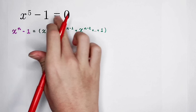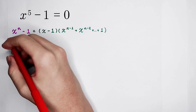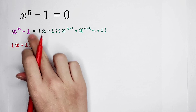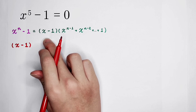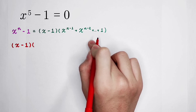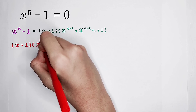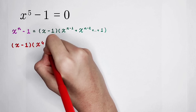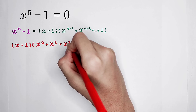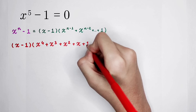So now the left side, x to the power 5 minus 1 — in this case, n is 5. The first bracket is always x minus 1. For the second bracket, x to the power n minus 1 is x to the power 4, plus x to the power 3, then x squared, then plus x, plus 1.